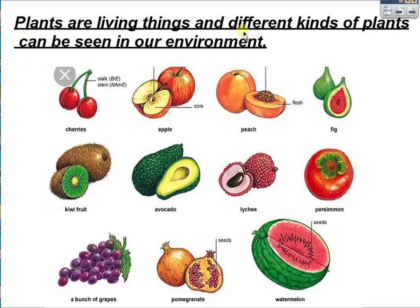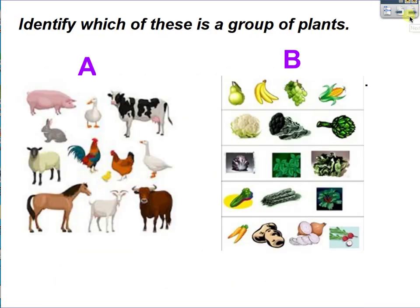Now we know plants are living things, and different kinds of plants can be seen in our environment. Look at these pictures — yes, they are plants. We can identify some in our environment. Now, can you recall any plants you know? Very good.